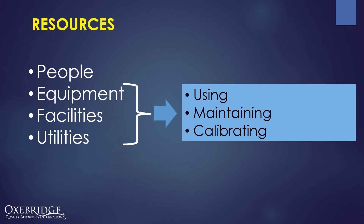Where the inspection body uses third-party vendors or subcontractors, it must have procedures in place for the selection, approval, and ongoing evaluation of those subcontractors. And if you intend to subcontract any of the inspection work, it must be done under very strict rules, or you can't get accredited to ISO 17020.